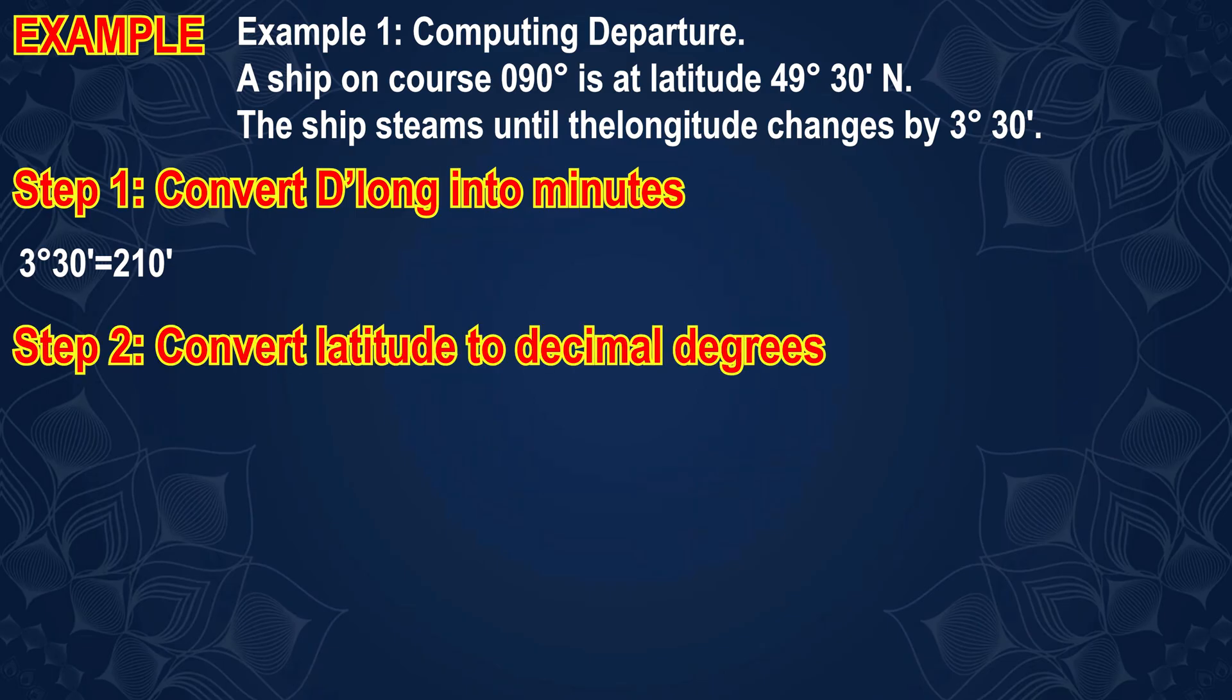Step 2: Convert the latitude into decimal degrees. 49 degrees 30 minutes equals 49.5 degrees.